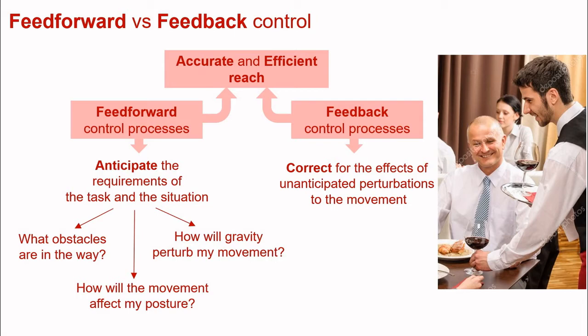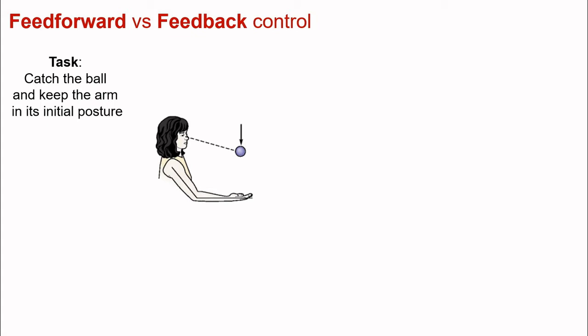Let's look at a specific example: the task of catching a ball while keeping your arm in its initial posture when the ball lands in your hand. In this task we have feedforward information — sight of the ball falling through the air gives information about when and how the ball is going to affect you when it impacts your hand. You can visually perceive properties such as how heavy the ball is, how fast it's falling, and therefore anticipate the kinds of effects it will have.